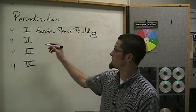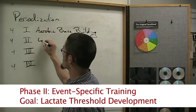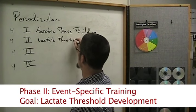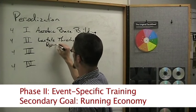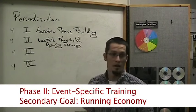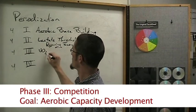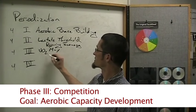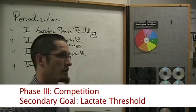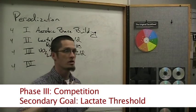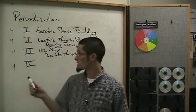At the beginning we do their baseline fitness, and then we move to event-specific training where the second most important threshold for distance runners is lactate threshold development. We're going to work on lactate threshold and also on running economy as our secondary goal. Then during phase three, our goal is VO2 max — aerobic capacity development — combined with lactate threshold development. The lactate threshold is actually a trainable threshold; you can get your body to flush out waste more efficiently by training at that threshold.